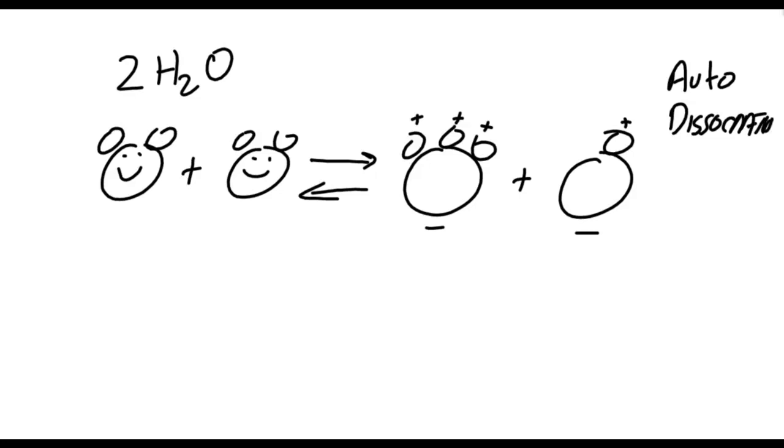This is called autodissociation. These guys can bump around in a glass of water, and as they bump into each other, sometimes very quickly, one of them can steal a hydrogen from another one. And then very quickly, they give it back. So it goes back and forth like that very fast.